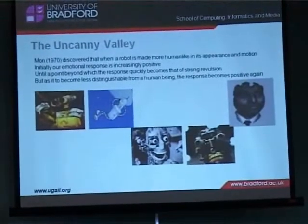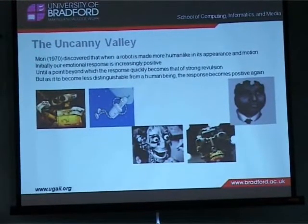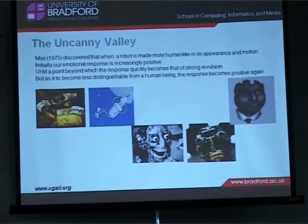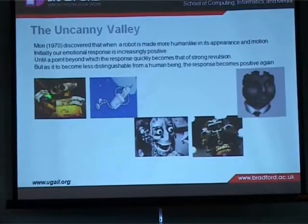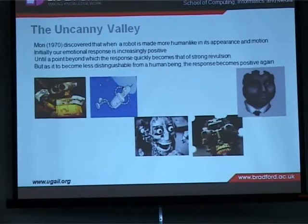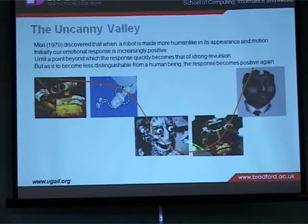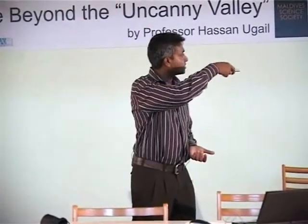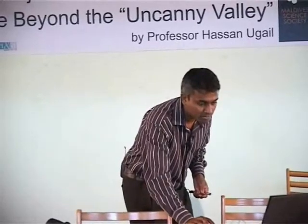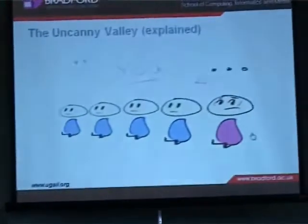One of the things that comes across is the so-called uncanny valley. This theory was developed by Mori, a Japanese scientist. Basically, when you design robots, the further away from a human face the robot is, the more we tend to like it. But there is a point where we start disliking it very much, forming a kind of valley. Most computer games and animations these days try to stay in this valley, and it is very difficult to create things that can go beyond it.